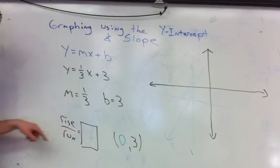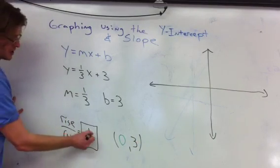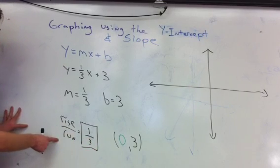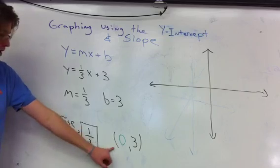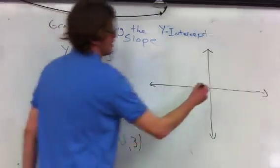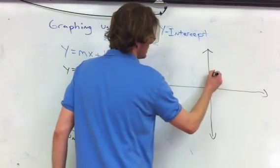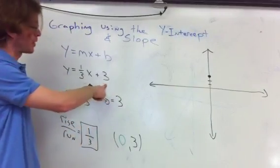And then one over three, that's rise over run, and we just have to make sure that we're rising one and running three. So we're going to plot this point first, the zero, three, one, two, three, right there. We got that from the original equation.